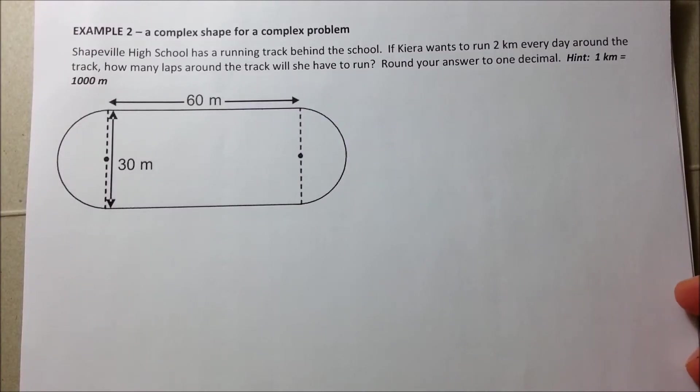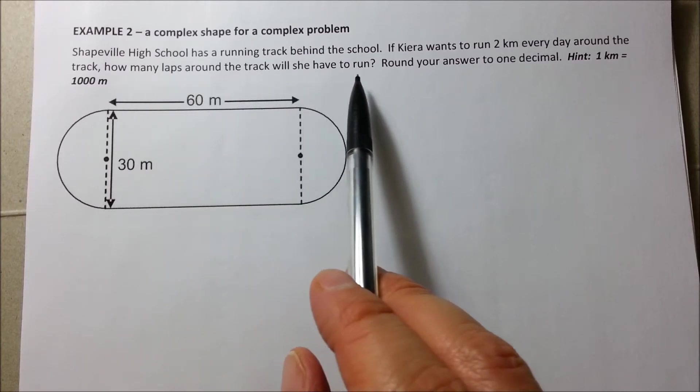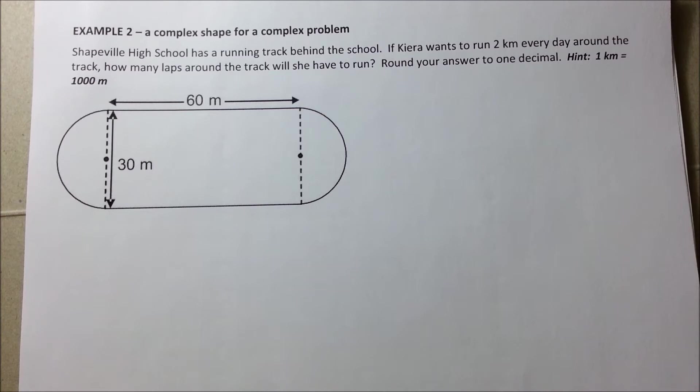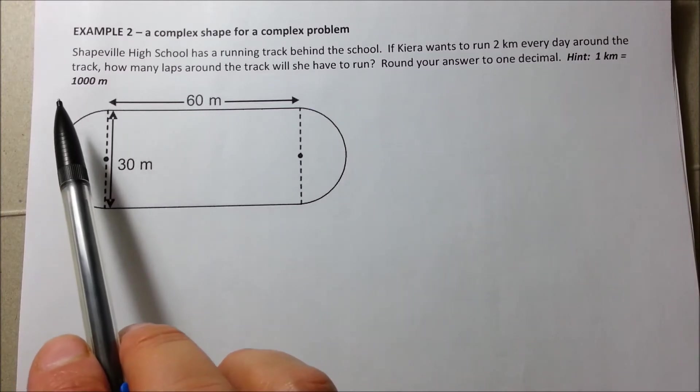Our next example, Example 2. Shapeville High School has a running track behind the school. If Kiera wants to run 2 kilometers every day around the track, how many laps around the track will she have to run? Round your answer to 1 decimal place and just remember that 1 kilometer is equal to 1000 meters.